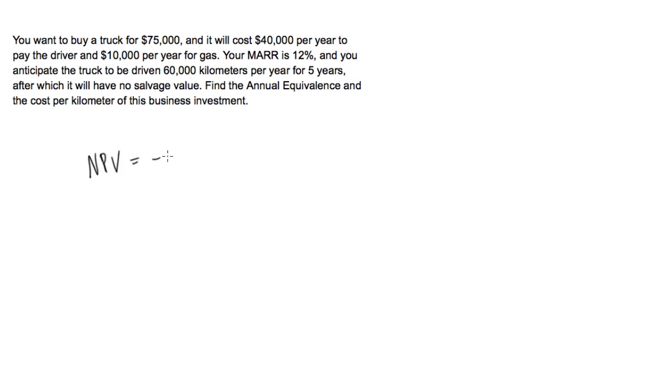We're going to have negative $75,000 - this is the initial investment for this project - minus the present value of an annuity looking at this $50,000 cost. The reason we're subtracting this is because this is a cost. We're not making $50,000 from this, we're paying $50,000. We don't know how much we should charge for this project yet.